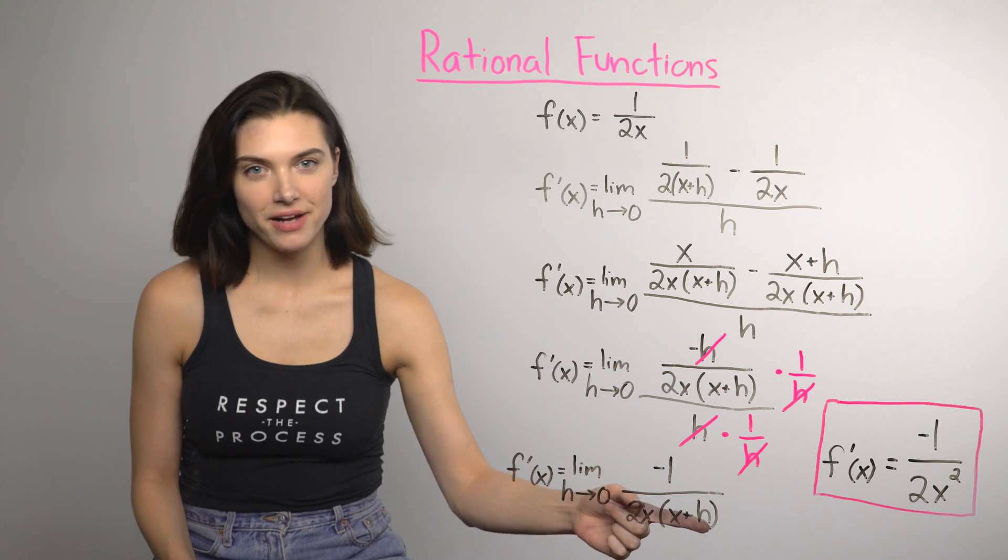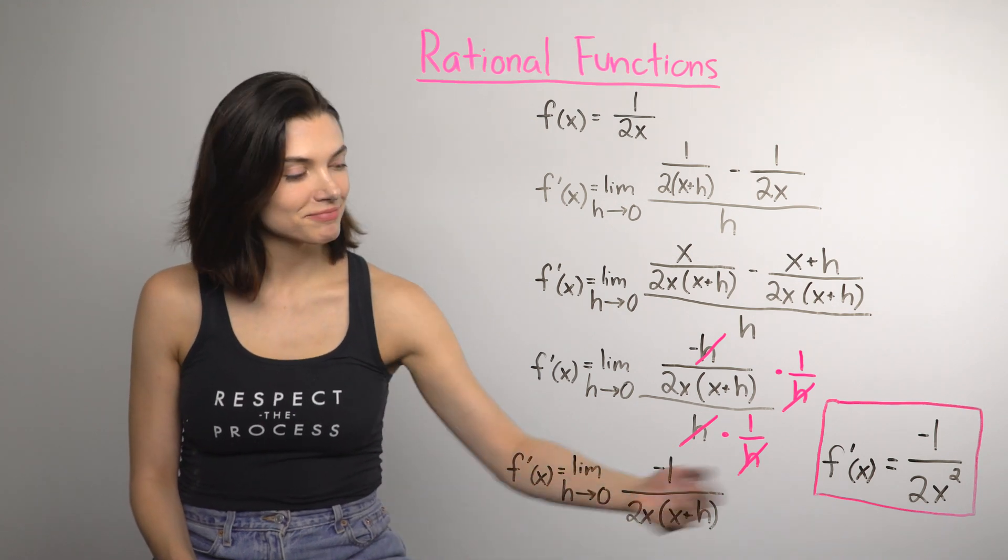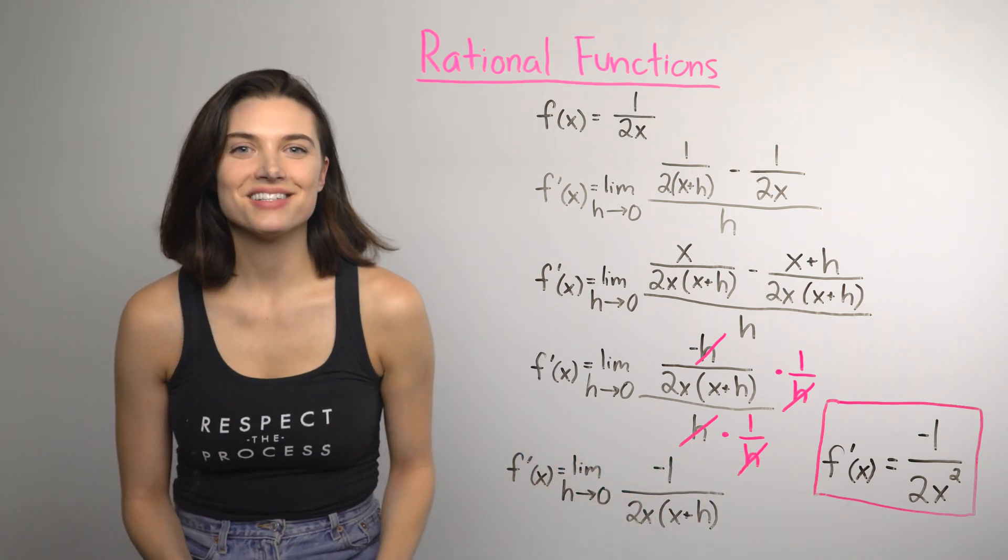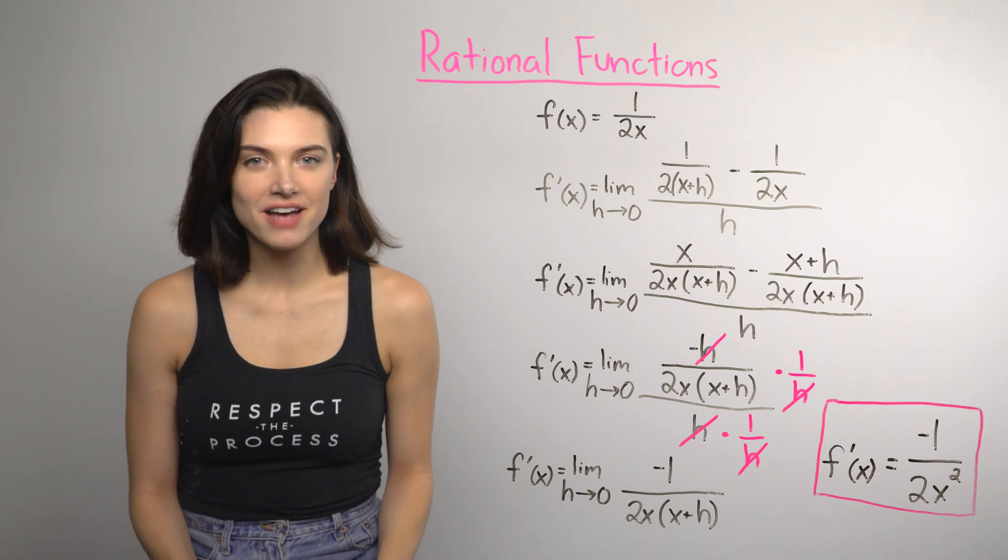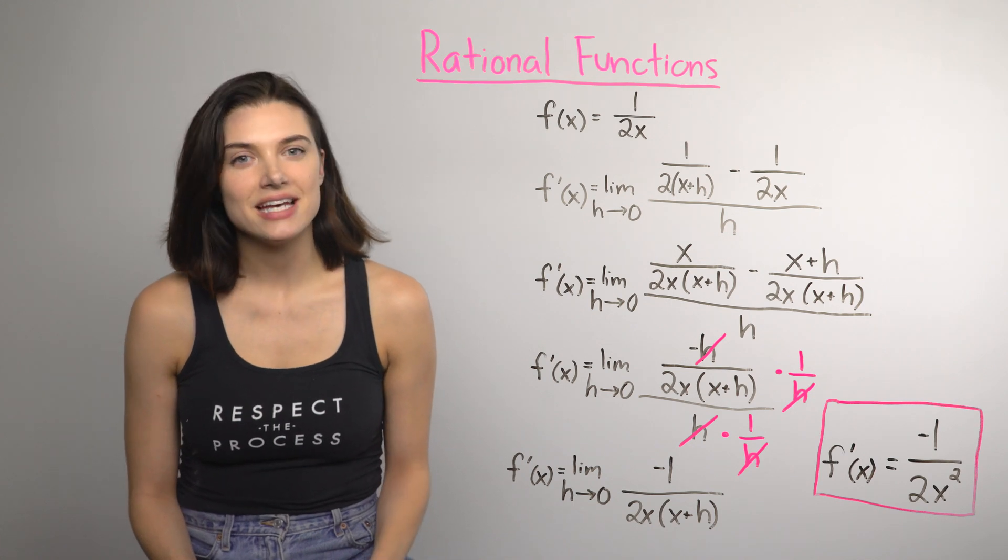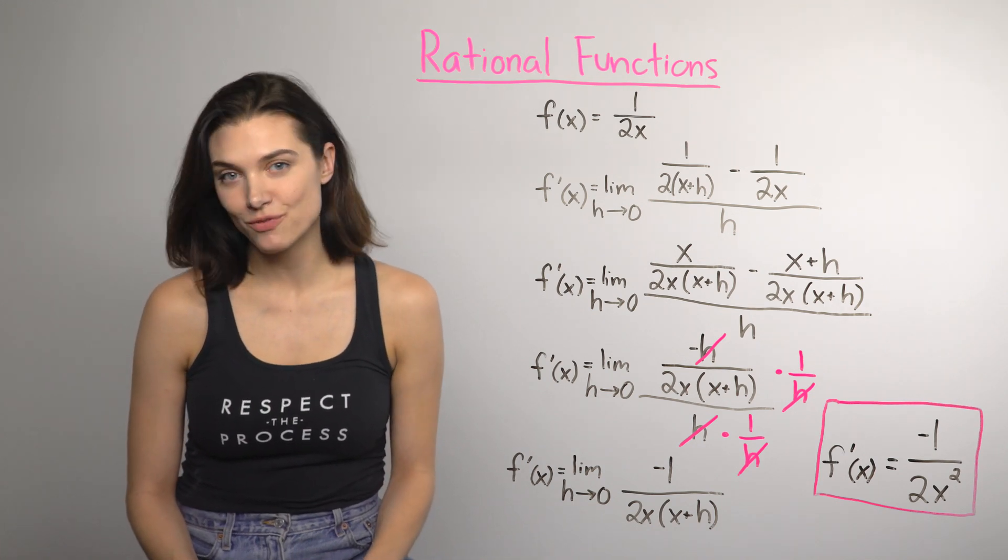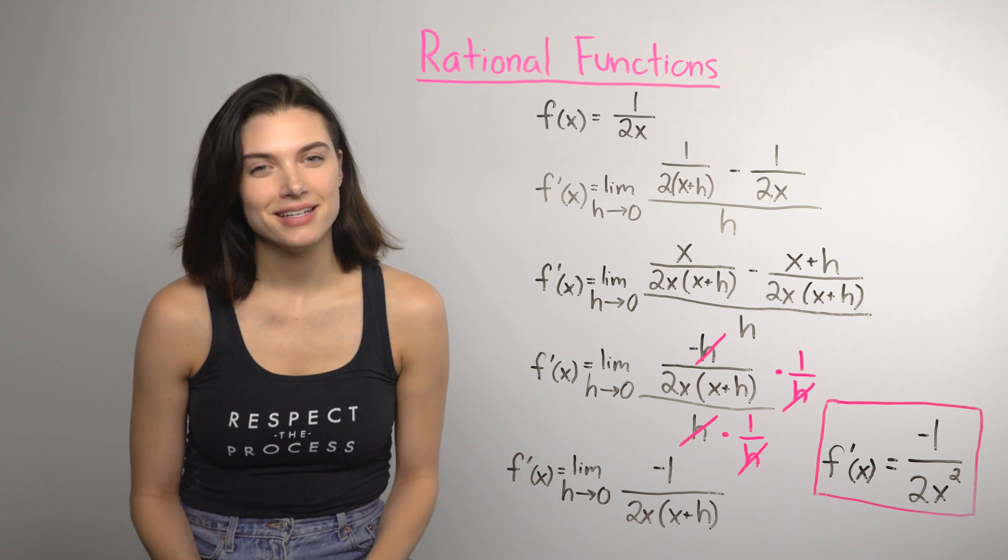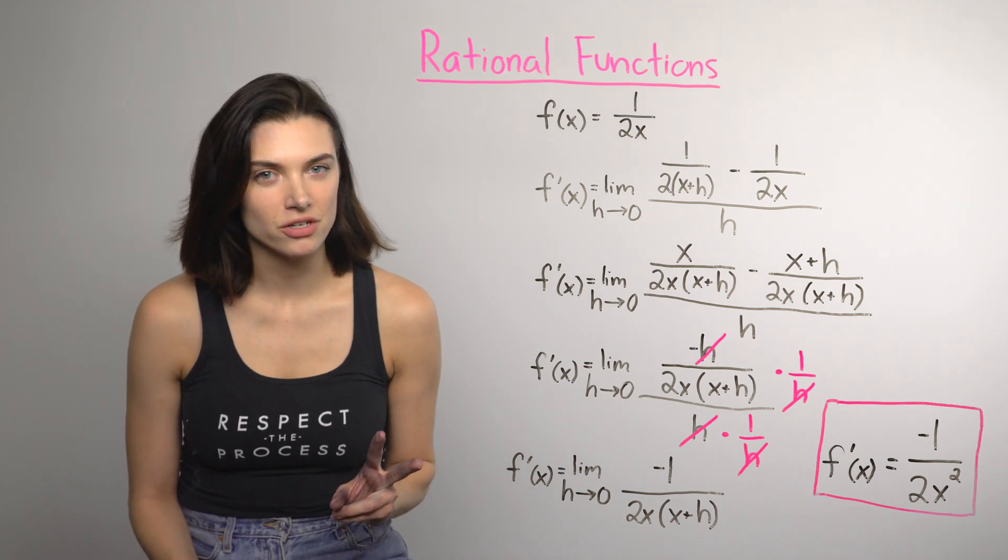I put 0 in for h, and with a little simplifying, we're there. So for the original function, f of x equals 1 over 2x, the instantaneous rate of change, or derivative, is f prime of x equals negative 1 over 2x squared.